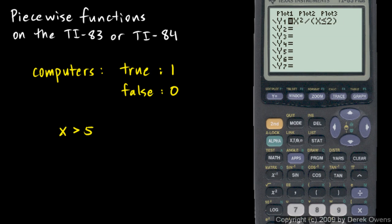And now go down to y2. We'll enter a second function. And we'll put in the function 2x minus 3, and put this in parentheses. 2x minus 3. Close parentheses. And then put divided by, and then in parentheses, x is greater than 2. So x, and then second, test. And that's option number 3, x is greater than 2. Close parentheses.